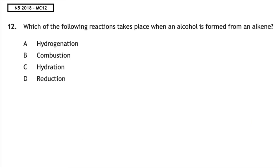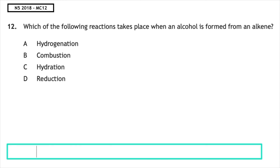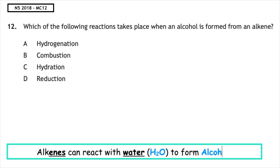This past paper question is from the National 5, 2018, multiple choice 12: Which of the following reactions takes place when an alcohol is formed from an alkene? Alkenes undergo addition reactions and when we add on water we form alcohols, so the name of this process is known as hydration. The answer is multiple choice C.